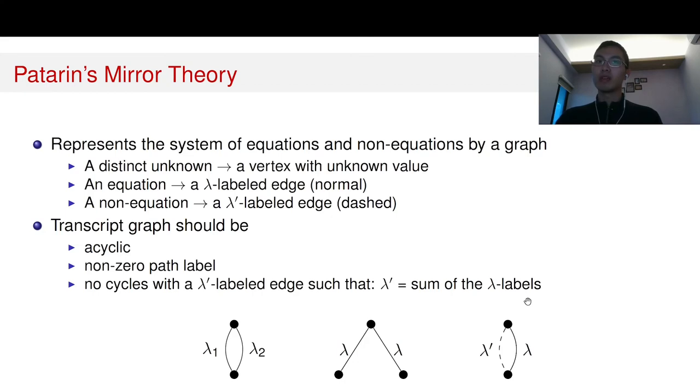The last property is related to the lambda' labeled edges, so related to the non-equations. It says that there shouldn't be cycles with lambda' labeled edge, such that this lambda' is equal to the sum of all the lambda labels in the cycle. So if we have this situation, then it says the distance between those two nodes is equal to lambda, while the distance between those two nodes is not equal to lambda'. When lambda' is equal to lambda, then it's inconsistent.